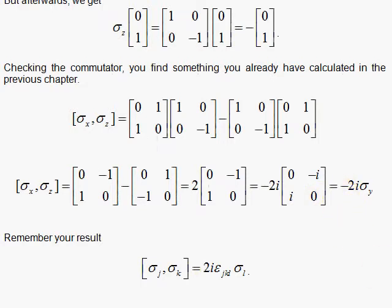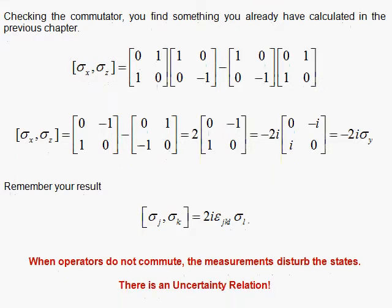So, when operators do not commute, the measurements disturb the states, and this is an uncertainty relation, which we'll look at more carefully in the next section, the famous Heisenberg uncertainty relation.